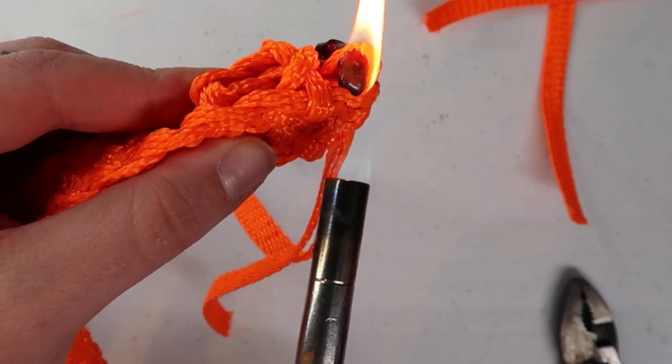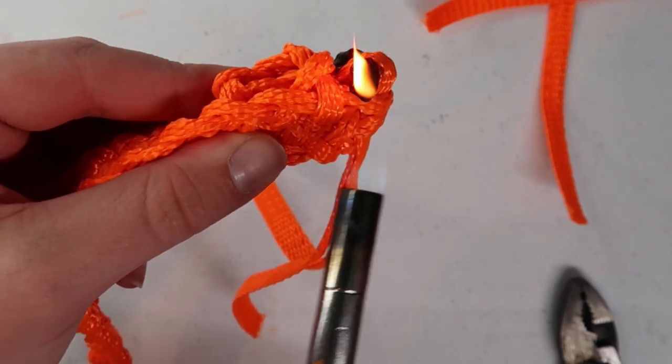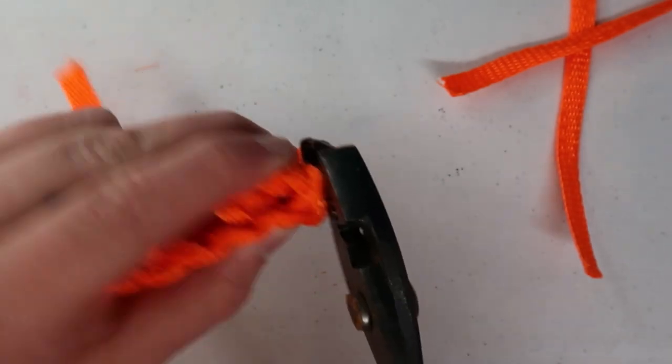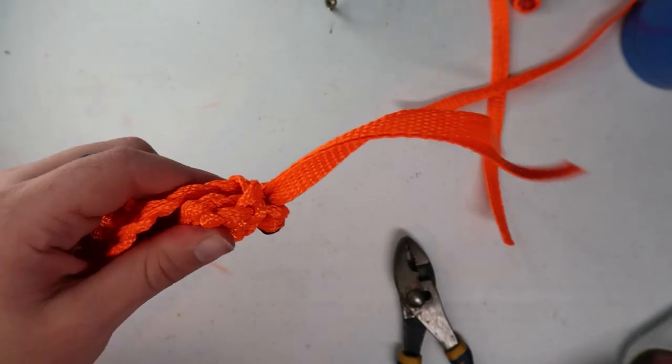We're trying to melt them down to the point where they bubble over into the strands next to them. This helps our knot create a really strong, solid bond so it doesn't unravel at all. So you kind of just want to find that sweet spot.